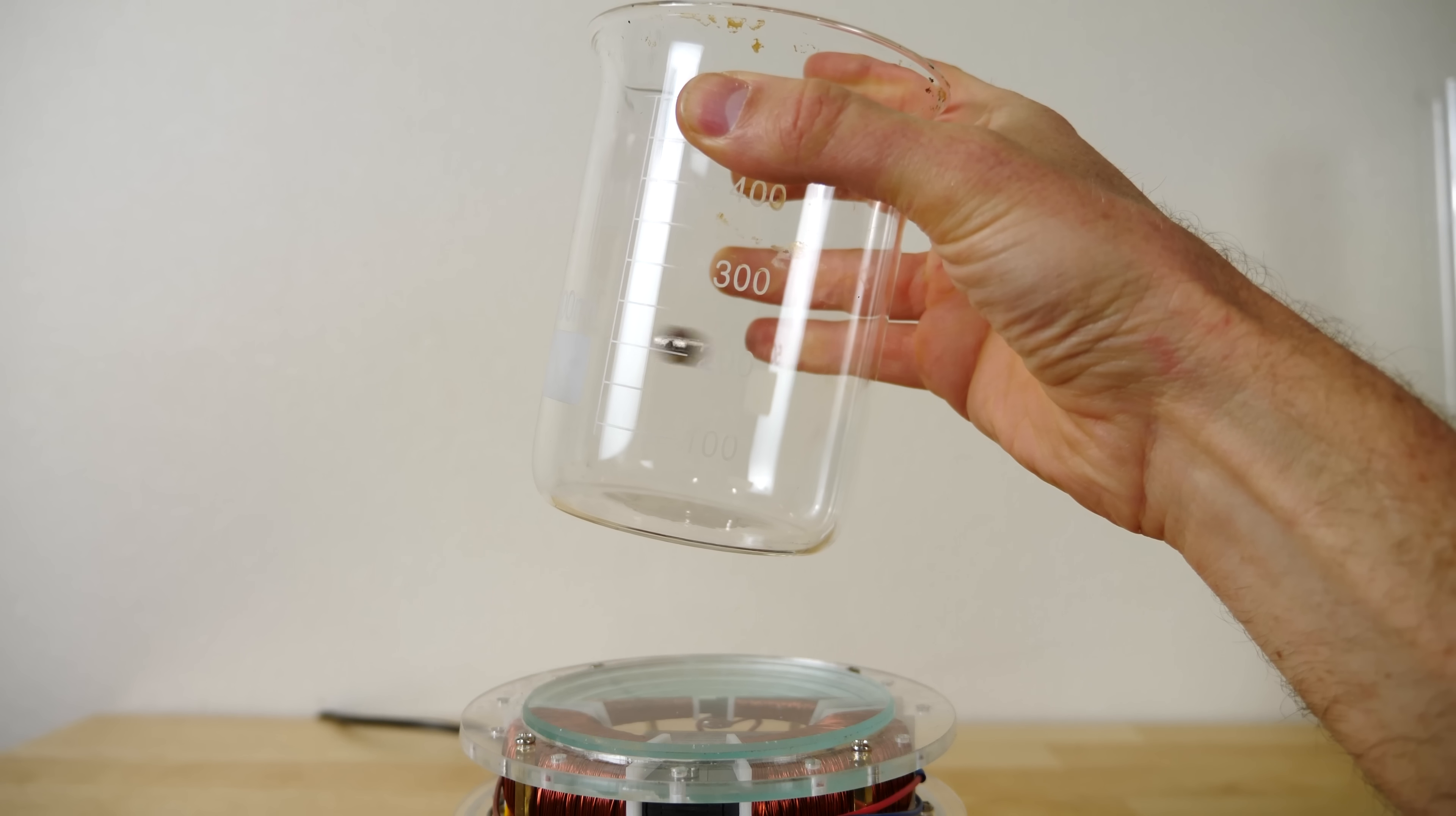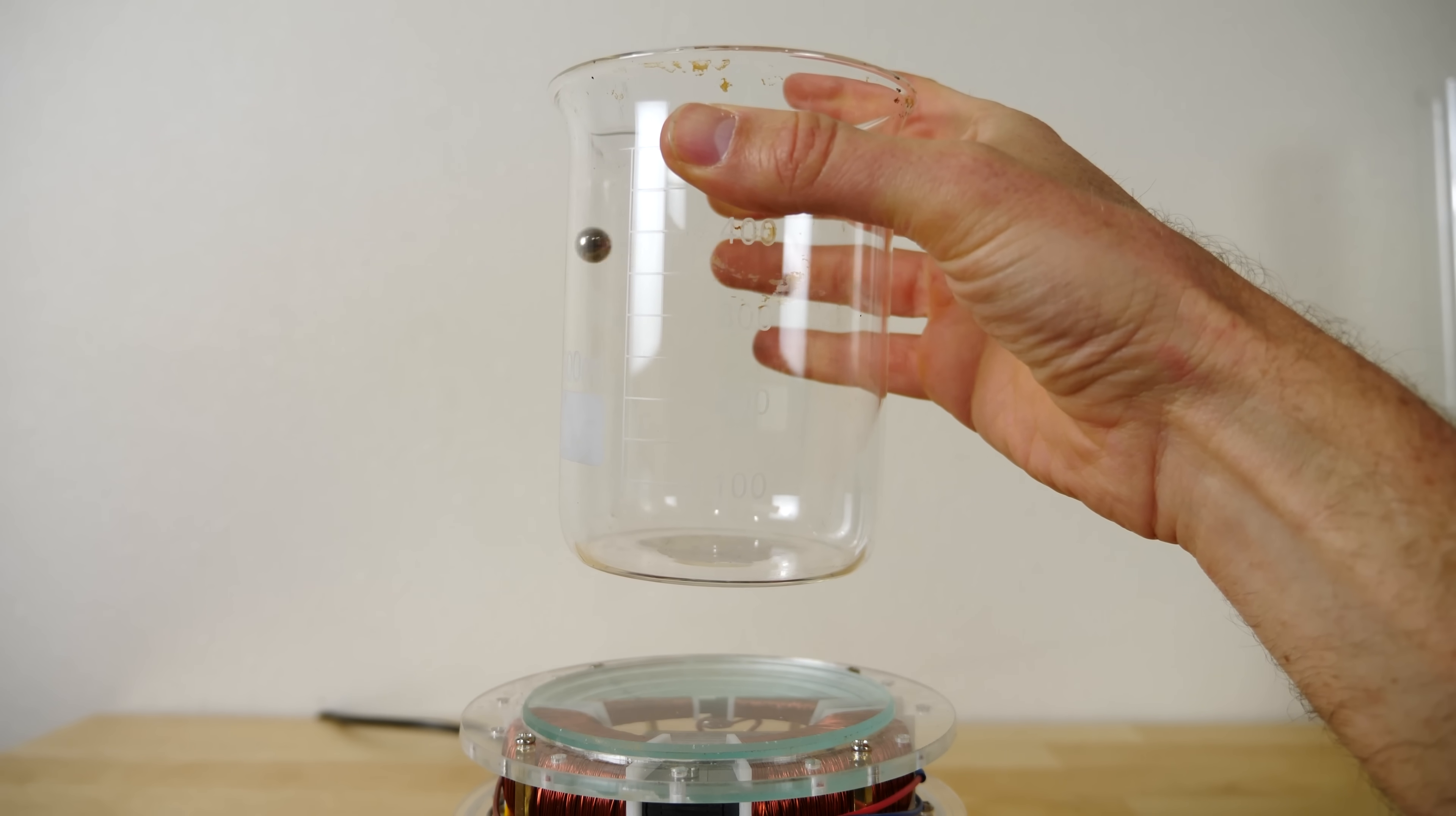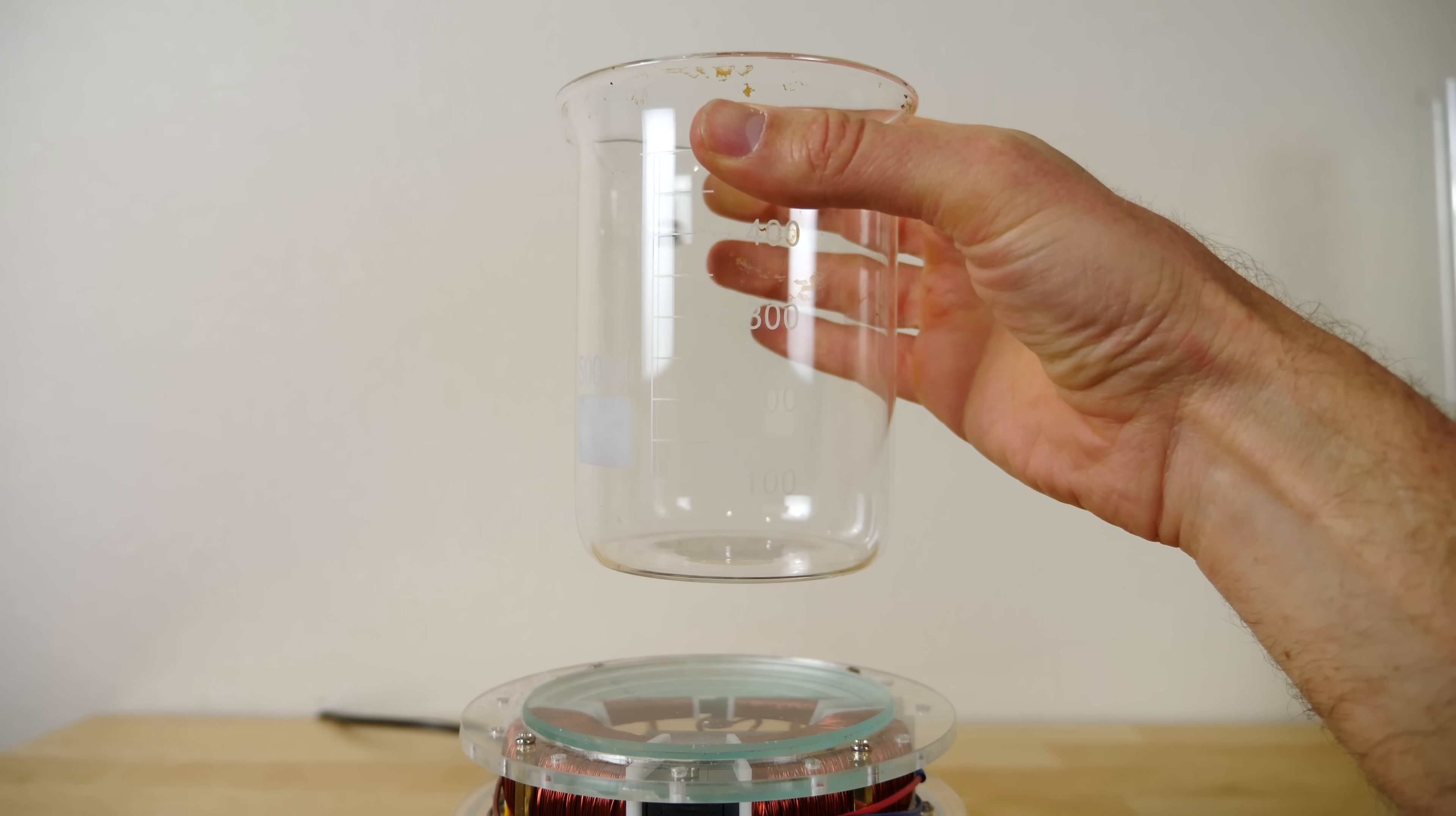So there you go. The device for creating the Egg of Columbus is really good for creating a secret device that can spin a ball around a cup like that.